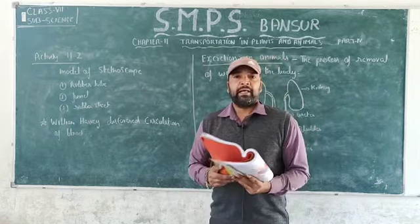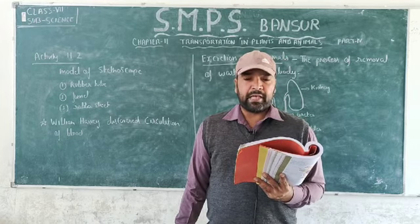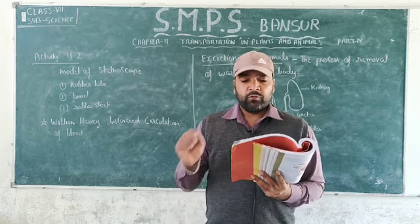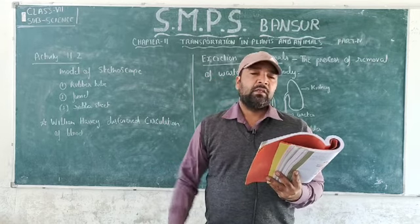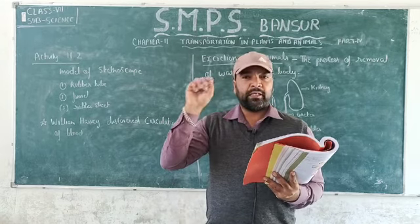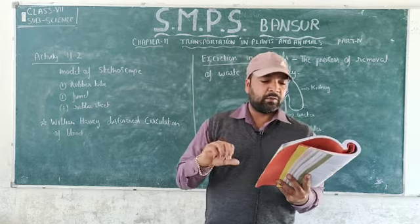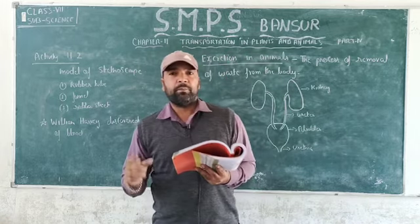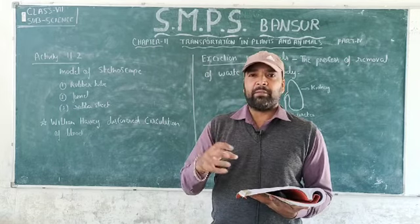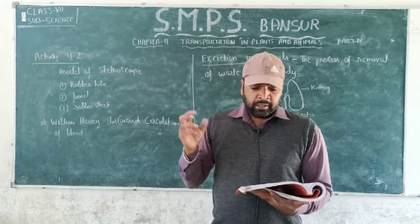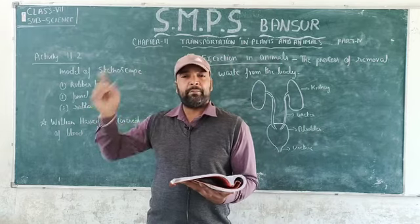We will continue with activity 11.2. Take a small funnel of 6 to 7 cm in diameter; fix a rubber tube of 50 cm so that we can put it in our ear and use it as an ear piece of the stethoscope. Tightly stretch a rubber sheet or a balloon on the stem of the funnel — balloon works well because it can easily catch the vibration of the heart, and those vibrations pass through the rubber balloon to the funnel and then through the pipe to your ears.